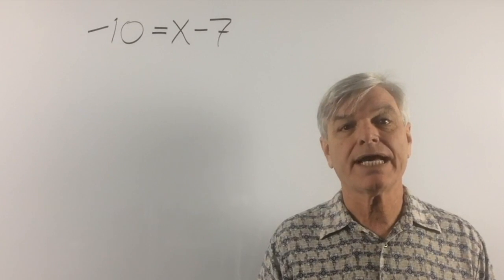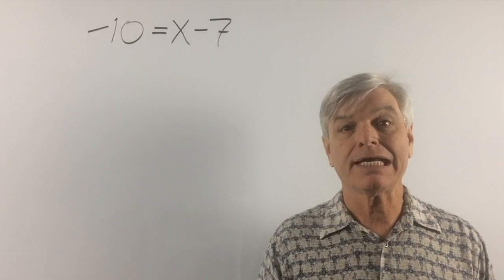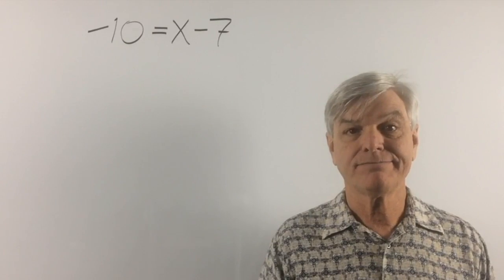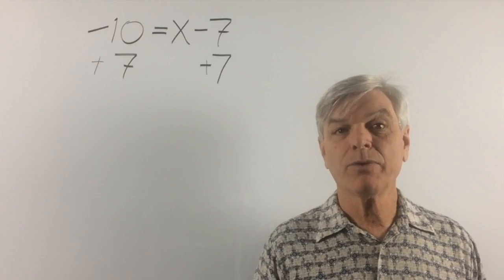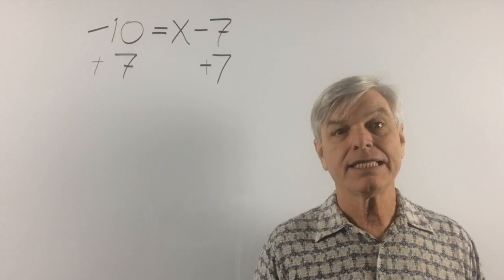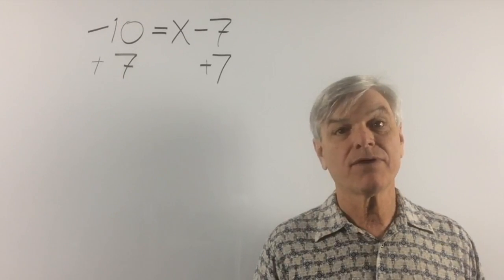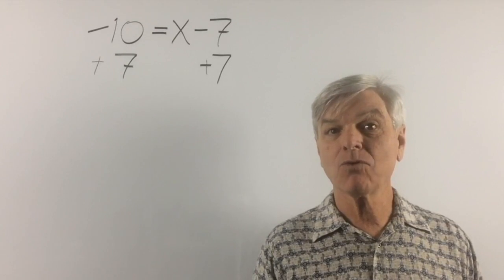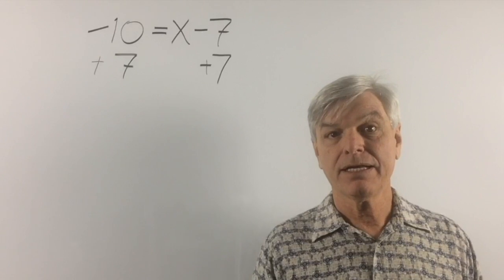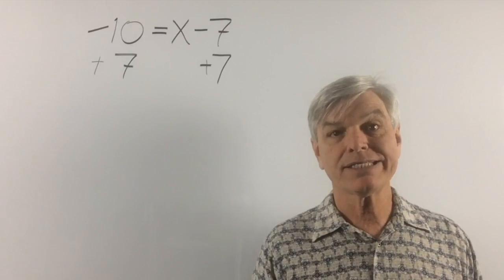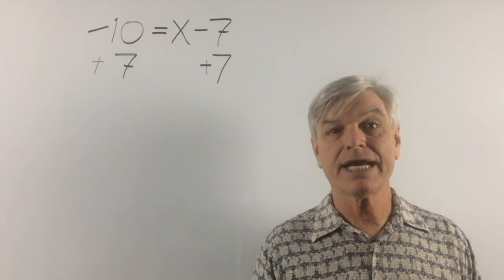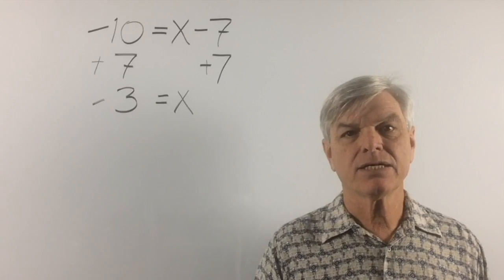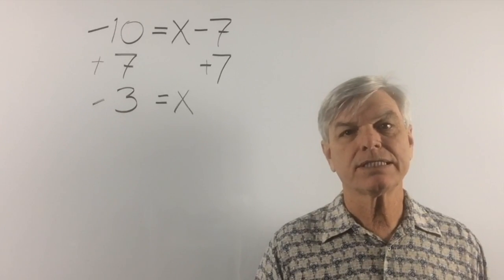Let's try another subtraction problem. We have negative 10 equals x minus 7. x is on the right-hand side and it's not alone. To get rid of the negative 7, we add positive 7 to both sides. Whatever we do to one side, we have to do to the other — that's what the equal sign means. Negative 7 plus positive 7 is 0. Bring the x and equal sign down. Negative 10 plus positive 7 is negative 3. So x equals negative 3.